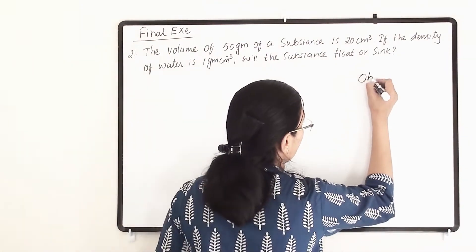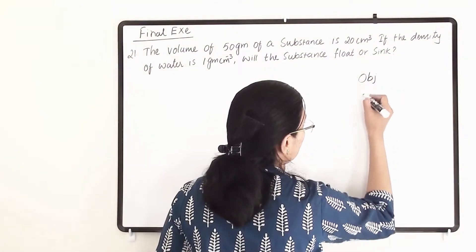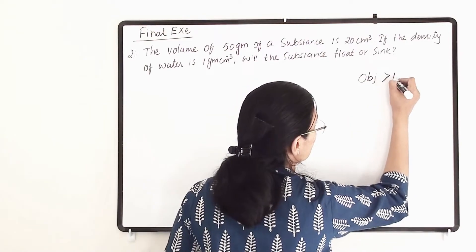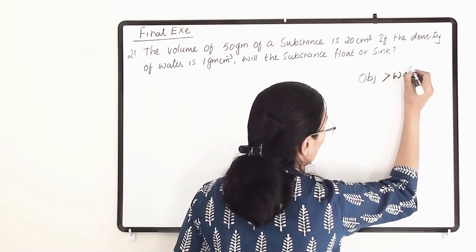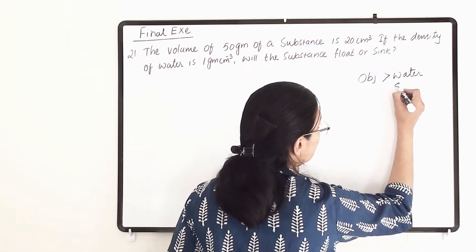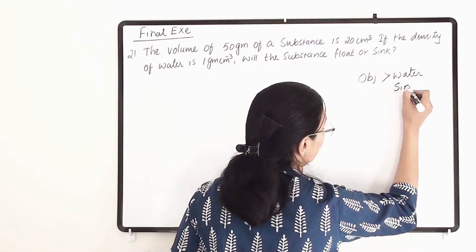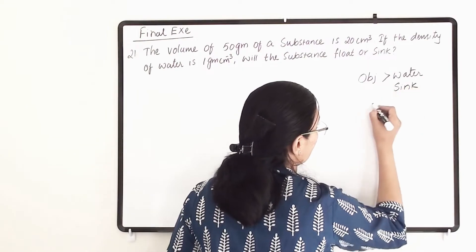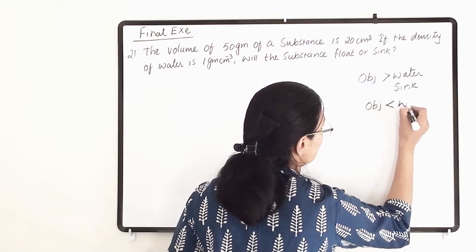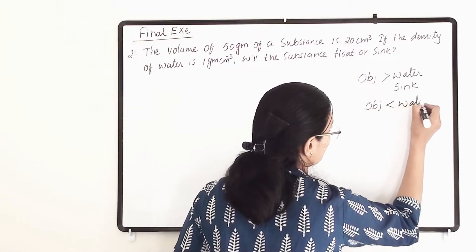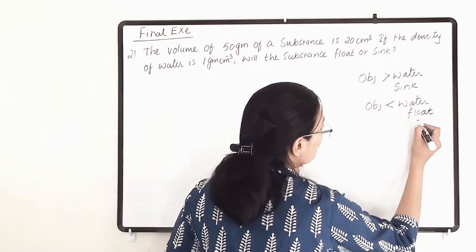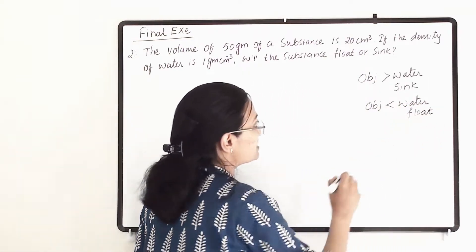If the object density is more than water density, then it will sink. And if the object's density is lesser than the water, then it will float on the surface.